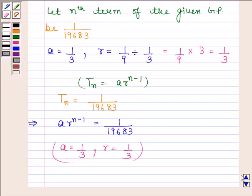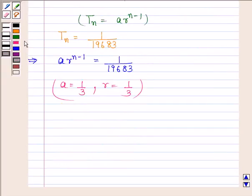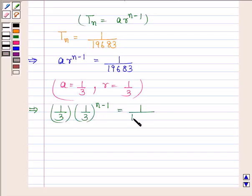By substituting the values of A and R, we get 1 by 3 into 1 by 3 to the power n minus 1 is equal to 1 by 19683.